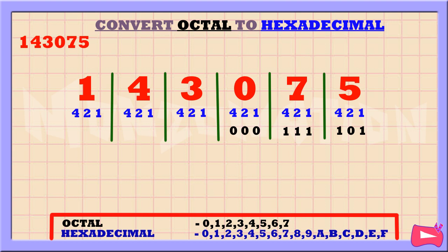Next is 0. We didn't use 4, 2, and 1, so let's replace it with 0. Next, 3 is the sum of 2 and 1. So, we're going to replace 2 and 1 with 1. We didn't use the 4, so let's replace it with a 0. Next, 4 is equal to 4, so we're going to replace 4 with 1. We didn't use 2 and 1, so let's replace it with a 0. Next, we have 1. This is equal to 1, so let's replace it with 1. We didn't use the 4 and 2, so let's replace it with a 0.